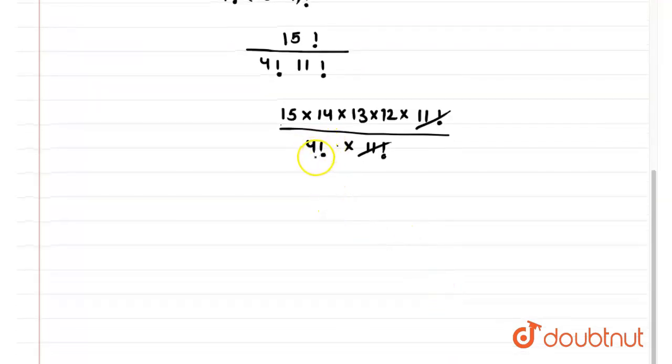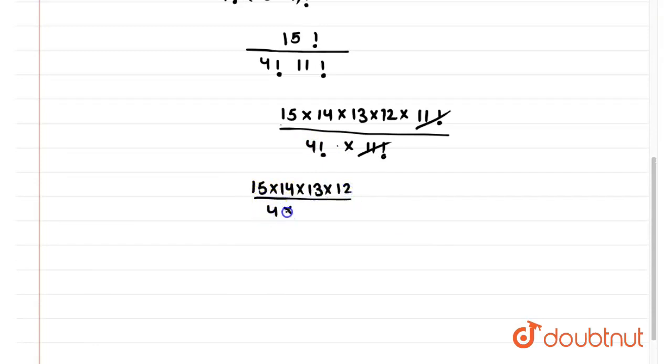So what is 4 factorial? Now 15 into 14 into 13 into 12 upon 4 into 3 into 2 into 1.